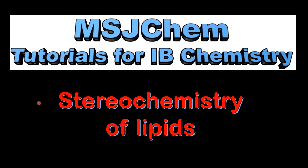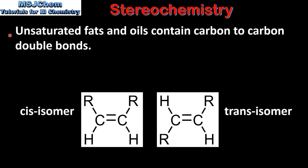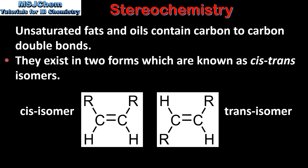This is MSJChem. In this video I'll be looking at the stereochemistry of lipids. Unsaturated fats and oils contain carbon to carbon double bonds. They exist in two forms which are known as cis-trans isomers.